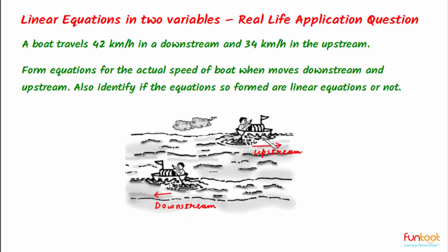When the boat is traveling upstream, its effective speed becomes less than the actual speed because it is traveling opposite to the current. And when the boat is traveling downstream, its effective speed becomes greater than the actual speed because it is traveling along the current.